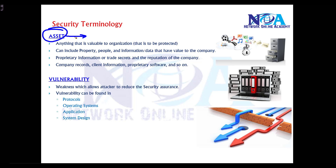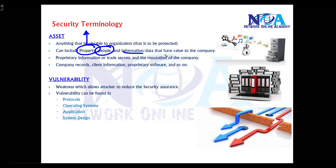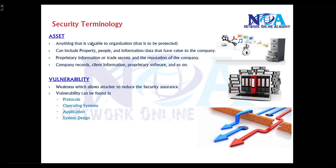The first term is asset. An asset is what exactly you want to secure — something which is valuable to your organization. This varies depending on the organization. It can be property documents, information about people, data that adds value to the company, company records, client information, or proprietary software.